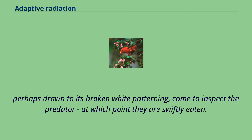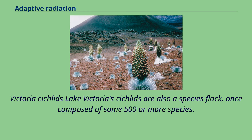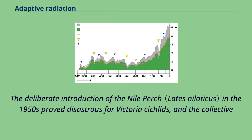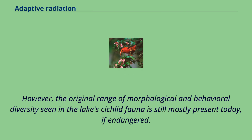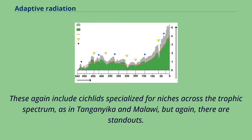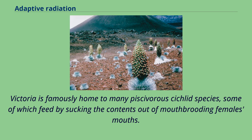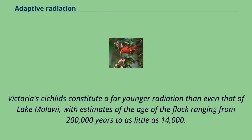Lake Victoria cichlids are also a species flock, once composed of some 500 or more species. The deliberate introduction of the Nile perch in the 1950s proved disastrous for Victoria cichlids, and the collective biomass of the Victoria cichlid species flock has decreased substantially and an unknown number of species have become extinct. However, the original range of morphological and behavioral diversity seen in the lake's cichlid fauna is still mostly present today, if endangered. These include cichlids specialized for niches across the trophic spectrum, but standouts include many piscivorous cichlid species, some of which feed by sucking the contents out of mouth-brooding females' mouths. Victoria cichlids constitute a far younger radiation than even that of Lake Malawi, with estimates of the age of the flock ranging from 200,000 years to as little as 14,000.